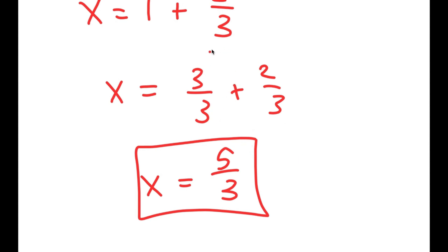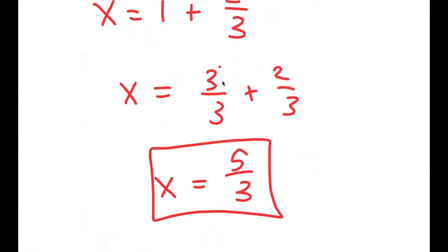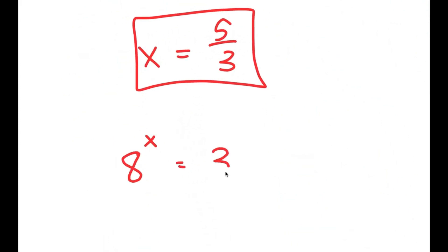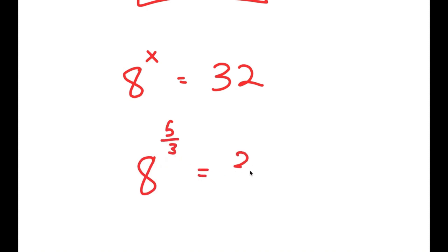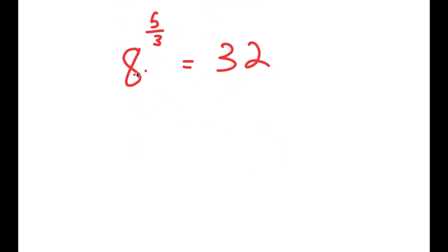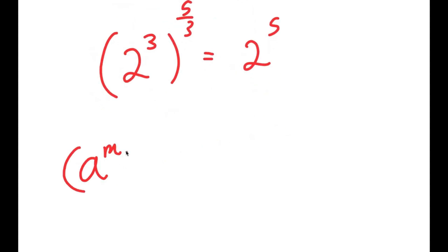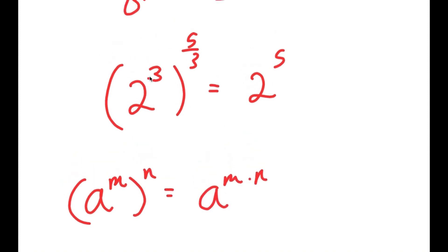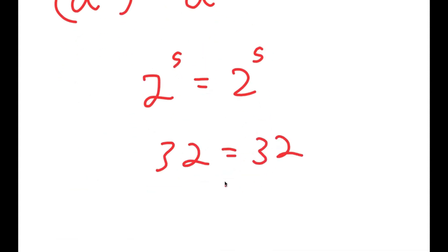How do we know that this is the right answer? Going back, we have 8 to the power of x equals 32, and we're plugging in 5 over 3. So we get 8 to the power of 5 over 3 is equal to 32. Now, 8 is the same thing as 2 to the power of 3. So I get 2 to the power of 3 to the power of 5 over 3, which equals 2 to the power of 5. Using the rule a to the m to the n equals a to the m times n, the two 3's cancel out and I get 2 to the power of 5 equals 2 to the power of 5, or 32 equals 32. This is correct.